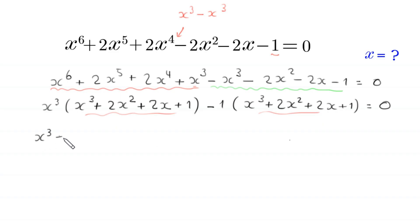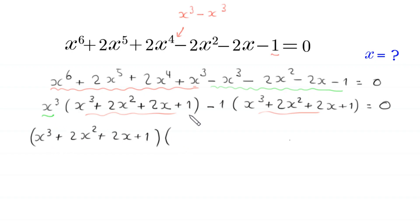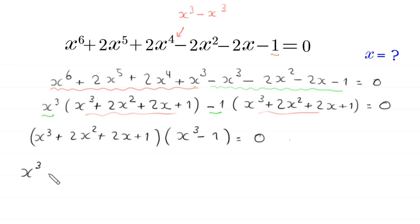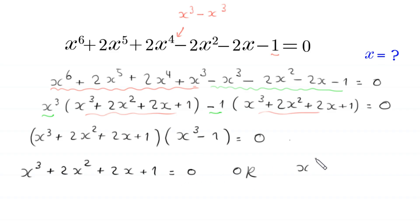x cubed plus 2x squared plus 2 times x plus 1 as common factor, and in bracket left: x cubed minus 1 is equal to 0. And from here either this expression x cubed plus 2x squared plus 2 times x plus 1 is equal to 0, or this expression x cubed minus 1 is equal to 0.